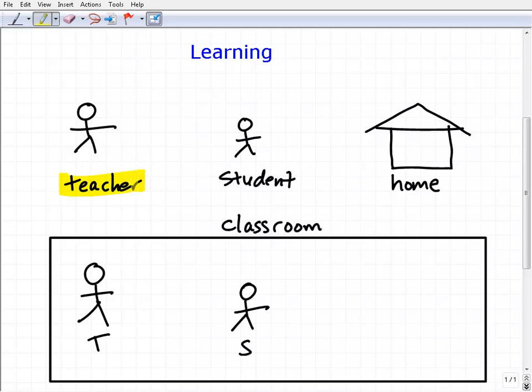Let's look at the players. We have a teacher, we have a student, and the student also has a home where they go after school. And then of course we have our classroom, our stage for learning. So traditionally, how has learning occurred?